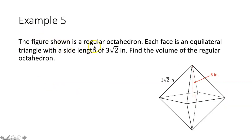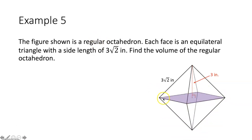Example 5: a regular octahedron where each face is an equilateral triangle with side length 3√2 inches. A regular octahedron is two square pyramids stacked on top of each other sharing the same base. To find the total volume, we find the volume of one pyramid and multiply by two.